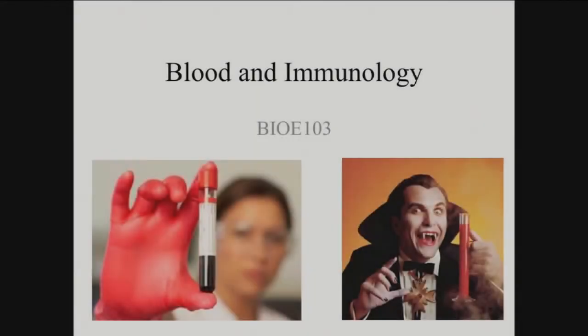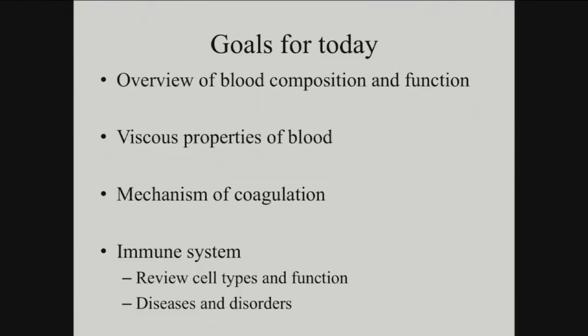Today is about blood immunology. We're going to quickly go through the first three parts: an overview of blood composition and function, the viscous properties of blood, and the mechanism of coagulation. Then we're going to spend at least the last two thirds of the class on the immune system — talking about the cell types, functions, and the disease states that happen when you have defects in your immune system.